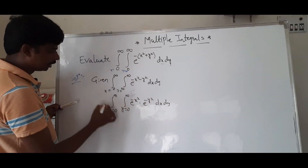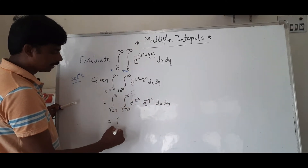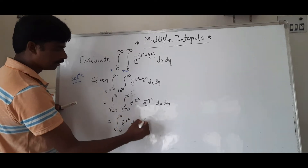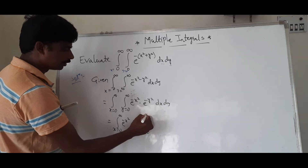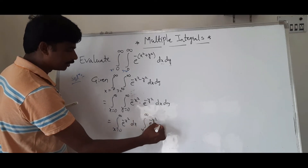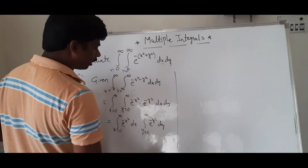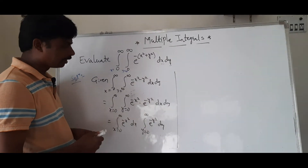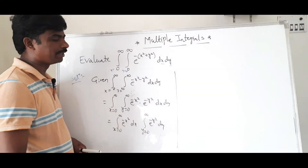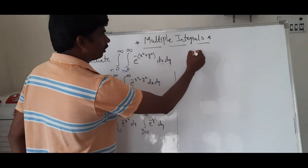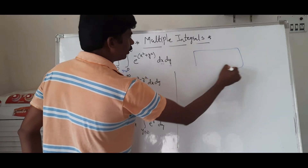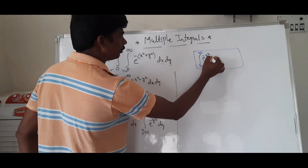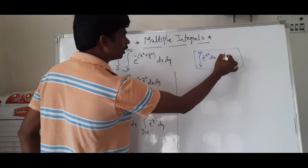Now, here we separate: integral x equal to 0 to infinity, e to the power minus x squared dx, into integral y equal to 0 to infinity, e to the power minus y squared dy. Do you know the beta-gamma relation? We will use this to prove the result. Integral 0 to infinity, e to the power minus x squared dx.